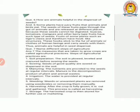Question number six. How are animals helpful in the dispersal of seeds? Some plants have juicy fruits that animals and birds eat. The seeds of these fruits pass through the gut of animals and are released at different places because these seeds cannot be digested. There are some fruits which are not digestible, like guava, tomato, mango. Berry type fruits are juicy and the seeds are not digested. So what do they do? They defecate or release, which from one side and from the other side will disperse.